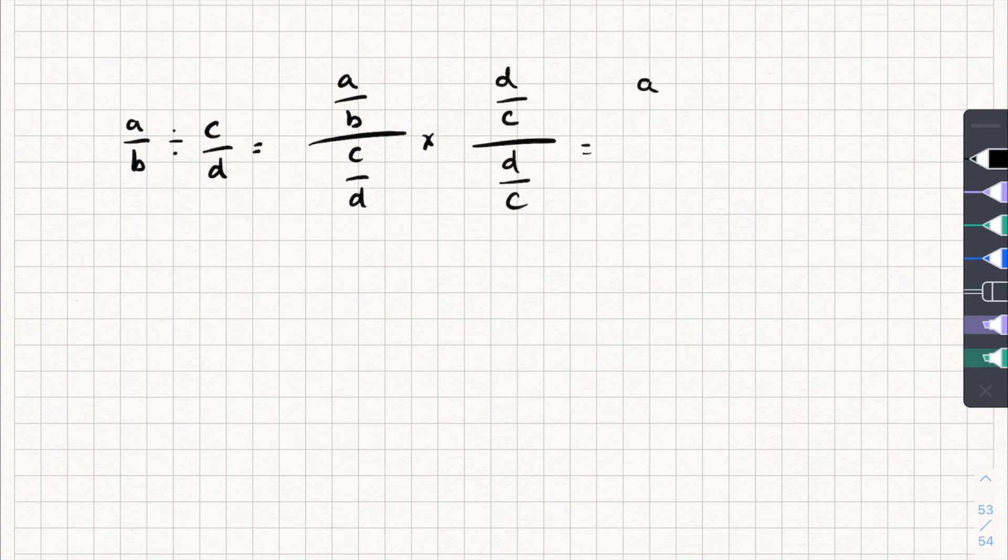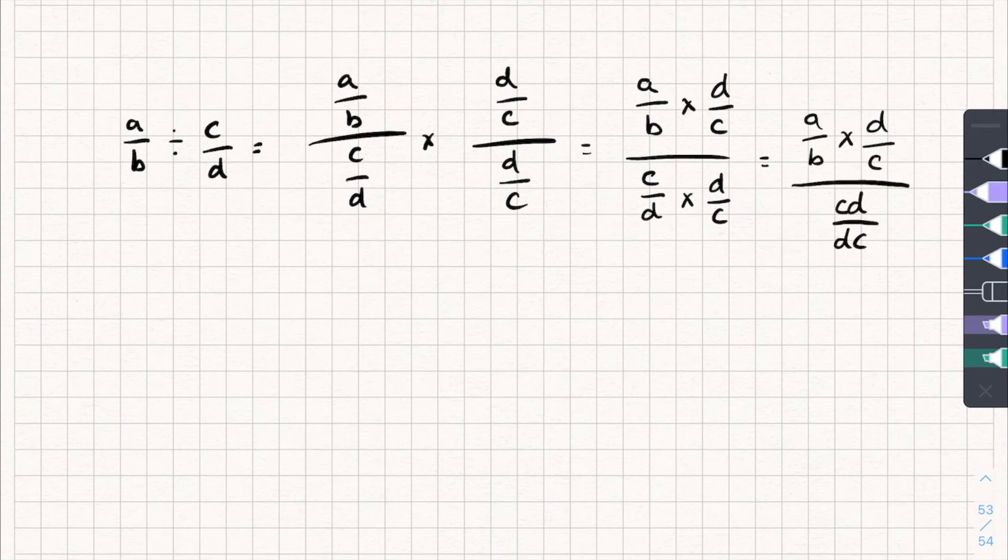And we're left with A over B multiplied by D over C, all divided by C over D multiplied by D over C, which is equal to A over B multiplied by D over C, all divided by C D over D C. And you'll see these cancel out. And we're left with one, so the answer is just the numerator.